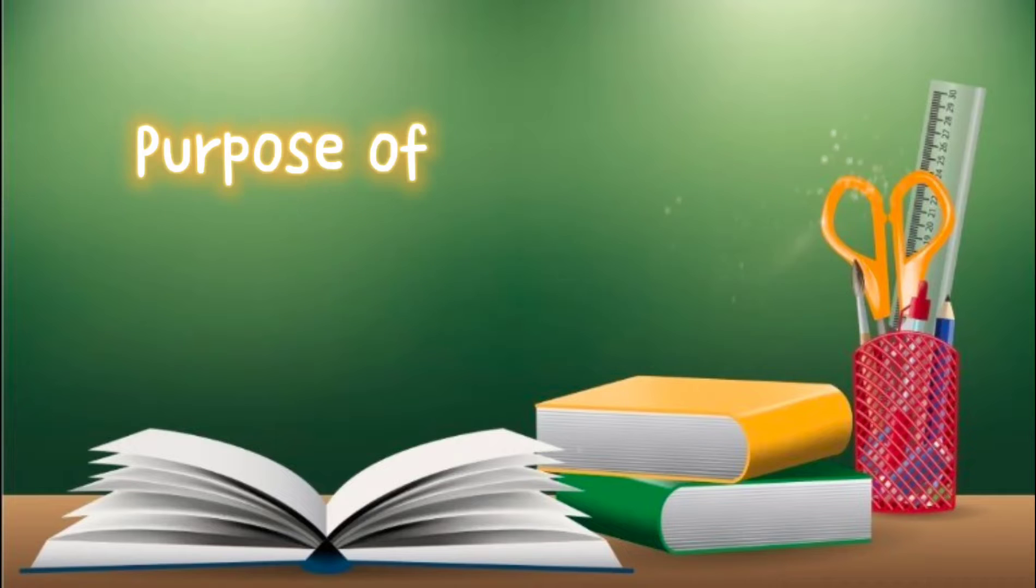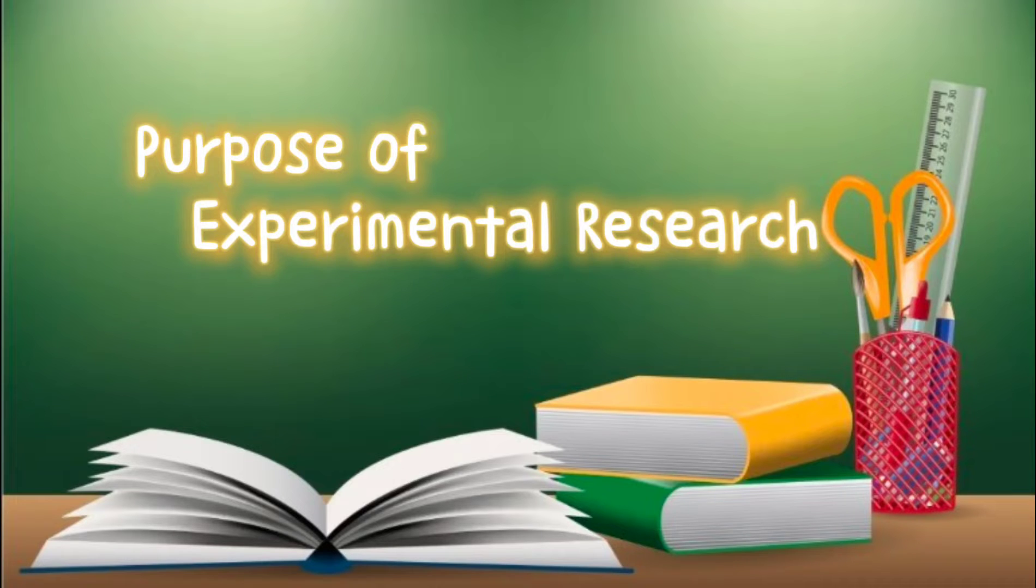The purpose of experimental research is to determine cause and effect relationships. The experimental research method enables us to identify causal relationships because it allows us to observe, under control conditions, the effects of systematically changing one or more variables.